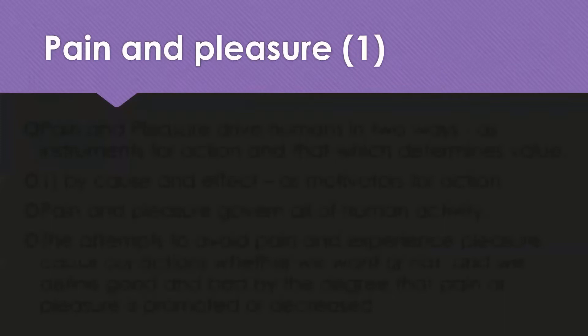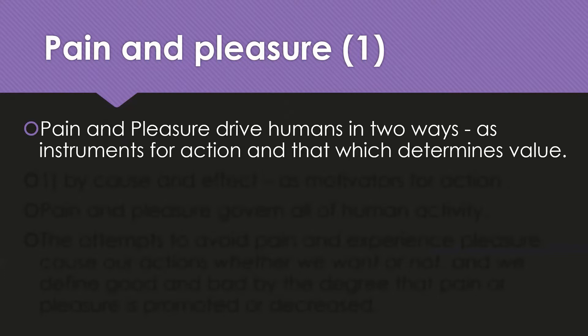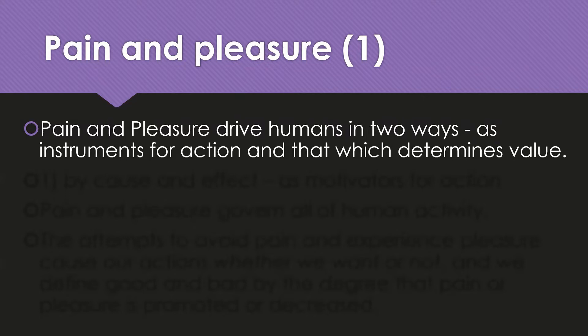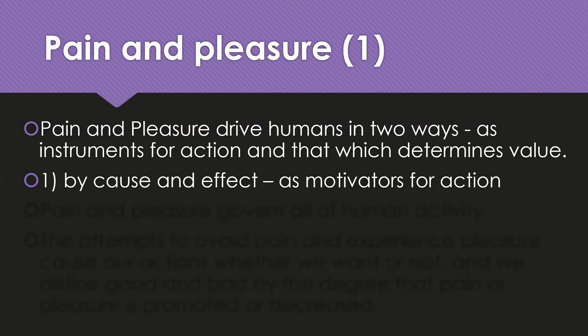Let's look at Bentham's main idea of utilitarianism. Utilitarianism is based on pain and pleasure, and we're going to cover that in two slides. Pain and pleasure, Bentham says, drive humans in two ways. First, as instruments for action — they motivate what we do — and also, they are the things that determine value for humans.